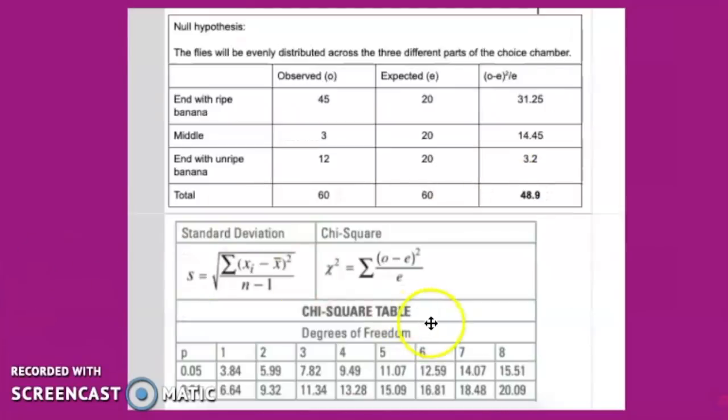Then we would add all this up because it's asking us to sum that, and that is our chi-square value. If you add all these values up, you get 48.9. Then we look at our degrees of freedom, which is 2 because we had three conditions minus 1. Then we look at our p-value for 0.05, which is typically what we use in biology, and we see our critical value here is 5.99. Now we're going to compare that to the 48.9 that we got when we were calculating chi-square.